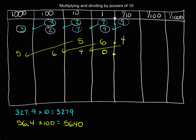When I talk about the value of the different digits: 5,000 is 100 times 50. 600 is 100 times 6. And 40 is 100 times 4 tenths. So I can look at the value of my different numbers.